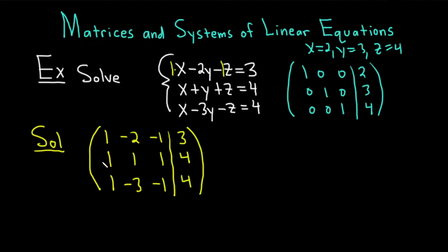So to do that, we're going to start by making this number a 1, which it already is. And now we're going to make these numbers below the 1 zeros. We're going to multiply the first row by negative 1 and add it to the second. We're going to do negative 1 times row 1 plus row 2. And then negative 1 times row 1 plus row 3.